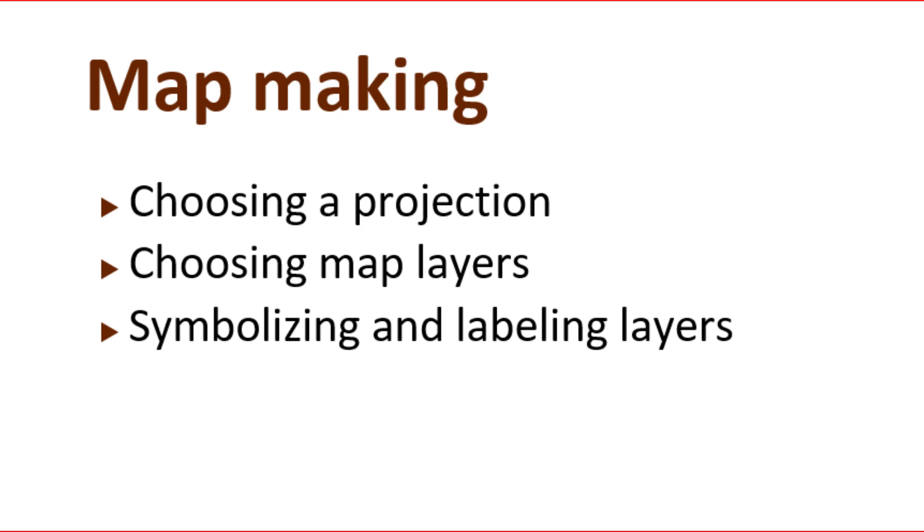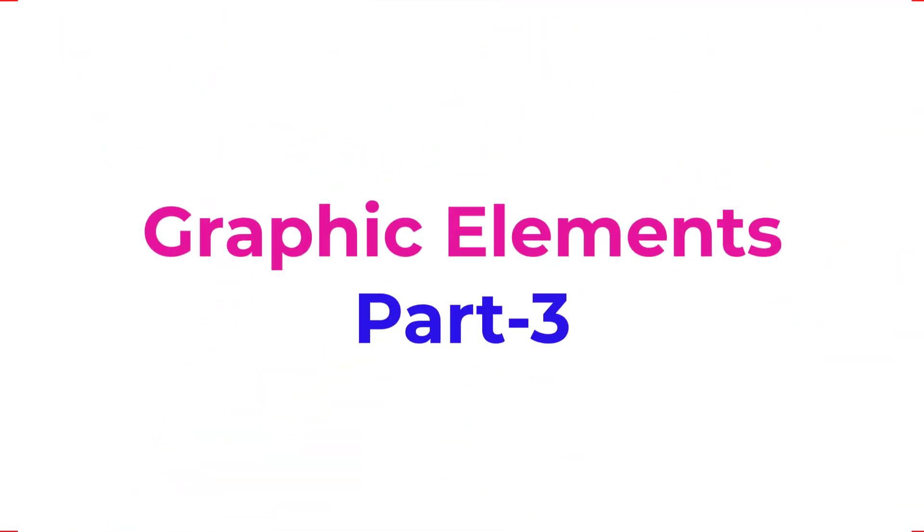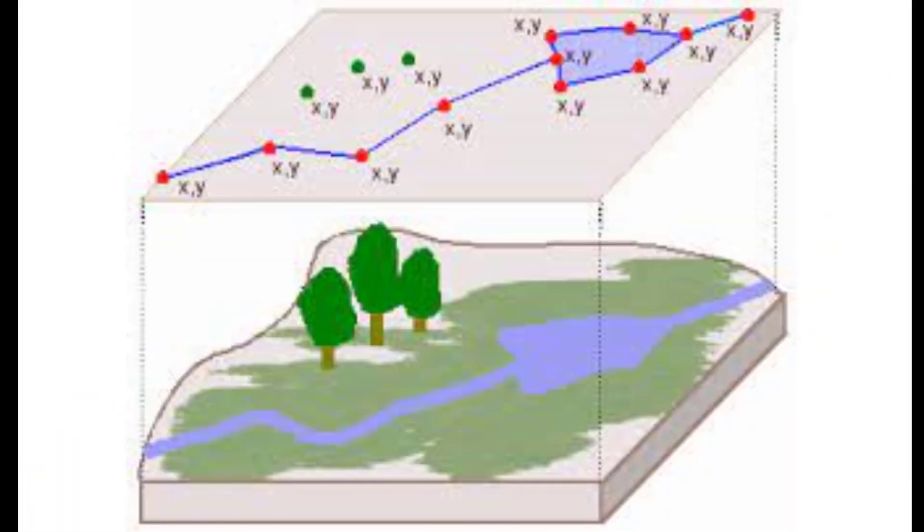To symbolize our maps, we use graphic elements. Geographical features represent the graphic. What are these graphic elements? They include points, lines, and polygons, as we can see in this screen, this picture.